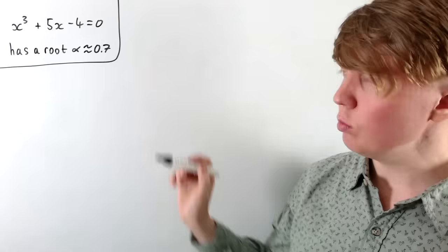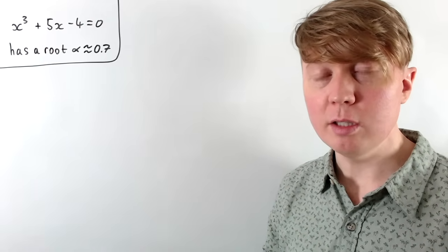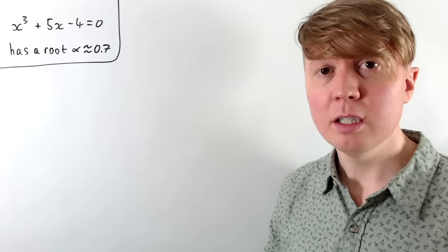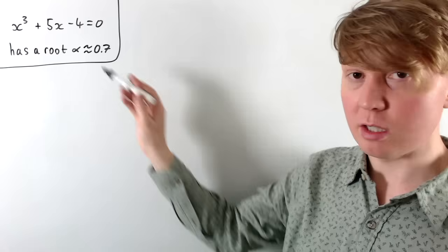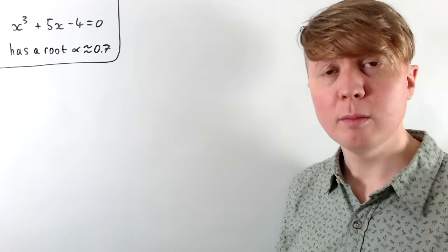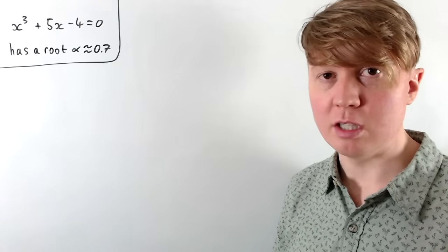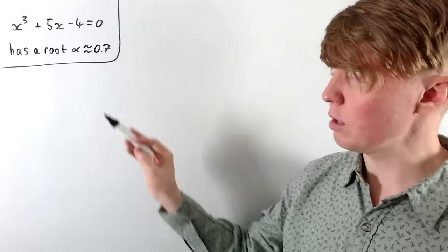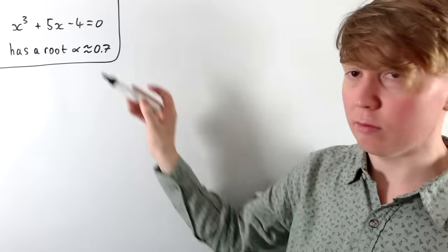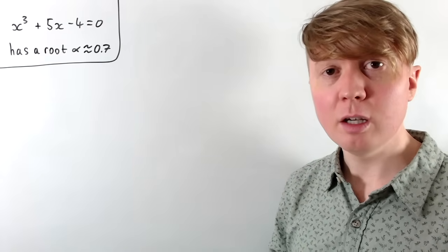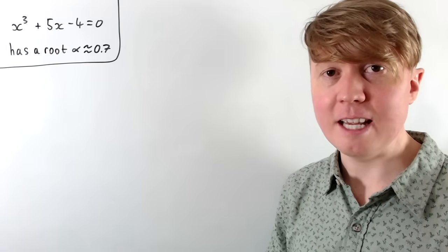So this is our cubic, and let's imagine we know that the root is approximately 0.7 — we might have achieved this just with a bit of trial and error. If you substitute in x equals 0.7, you get something negative on the left-hand side, then if you substitute in something slightly bigger, like 0.8 or 0.75, you get something positive on the left-hand side. So in between this negative and positive value, there must be a value where this is 0, because this cubic function is continuous.